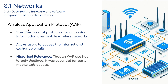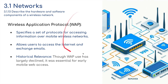WAP — Wireless Application Protocol — specifies a set of protocols for accessing information over mobile wireless networks. It allows users to access the internet and exchange emails. Though WAP use has largely declined and you probably don't see it now, it was essential for early mobile web access. It's still on the IB exam — the current specification started in 2014, so some of this is fairly old, but you need to know it for historical relevance.